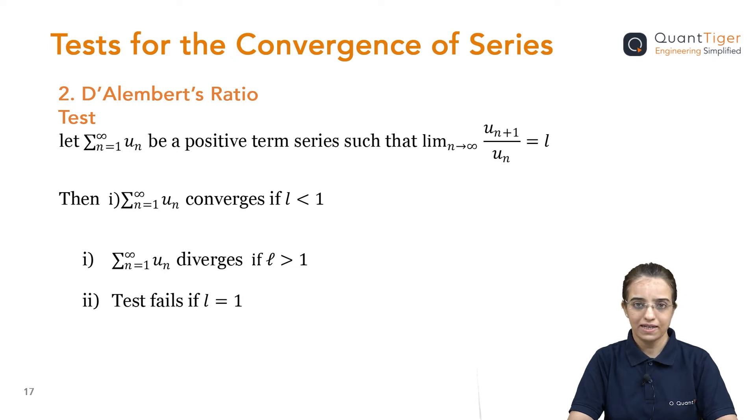We are going to use D'Alembert's ratio test. Here, like with the name, we will take a ratio test. Un is one of this series which is having positive terms. Then what we will take? We will take u_{n+1} upon u_n. So, ratio we have taken here where n tends towards infinity and it is giving me L.